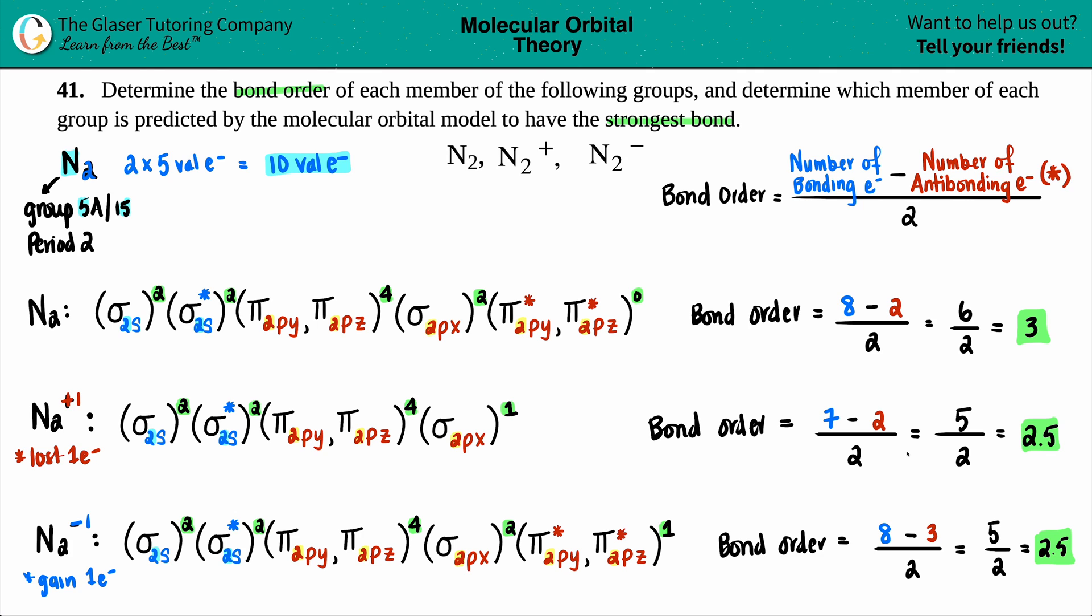Now those are all your bond orders. Bond order of N2 is three, N2 plus one is 2.5, and N2 minus one is 2.5. We have to find out which one has the strongest bond. The strongest bond is just the highest bond order because these numbers represent what type of bonds are really happening. Three means a triple bond, so N2 without a charge would be the strongest bond. That is the final answer.